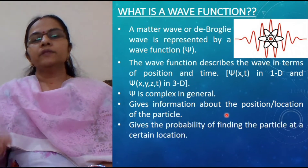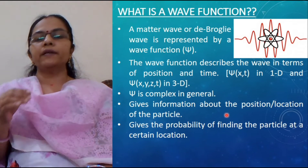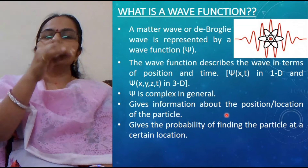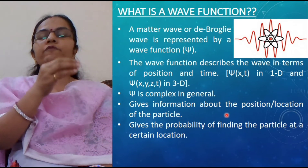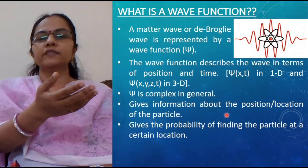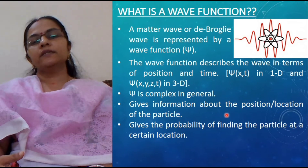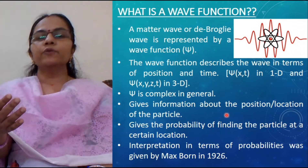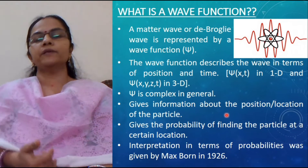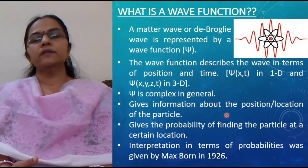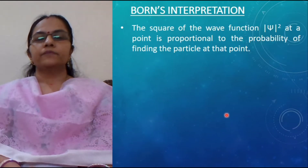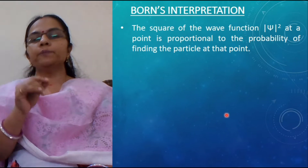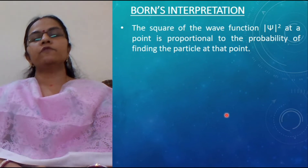This wave function gives the probability of finding the particle at a certain location. If some particle is moving, at a particular location what is the probability that we can find the particle at a particular instant — that probability is obtained from this wave function. This interpretation of the wave function — how we can obtain the probability — was given by Max Born in the year 1926. According to Born's interpretation, the square of the wave function, that is |psi|², at a particular point is proportional to the probability of finding the particle at that point.